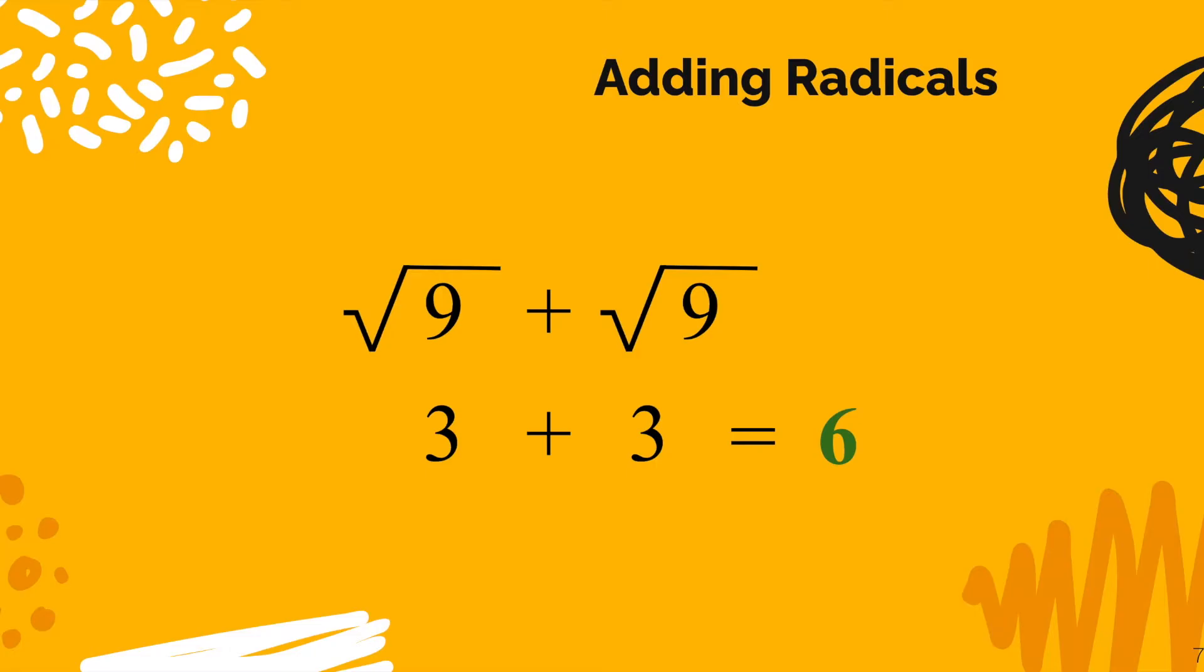So I'll ask you this. Is that the same thing as the square root of 18? If you type the square root of 18 into your calculator, I can guarantee it's not going to say 6. So you cannot add 9 plus 9 and get 18 here. The square root of 9 plus the square root of 9 is not the same thing as the square root of 18. Something I wanted you to realize right off the bat here.